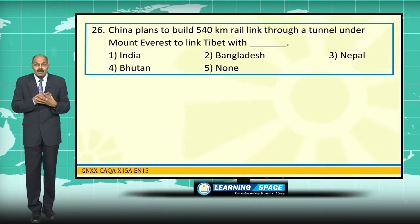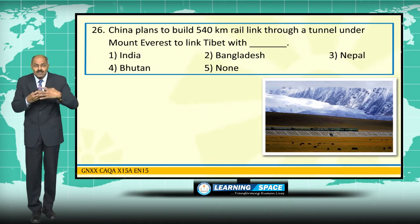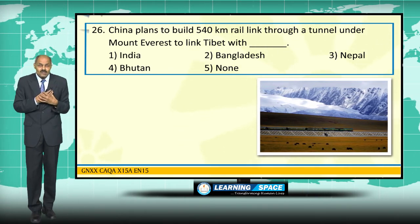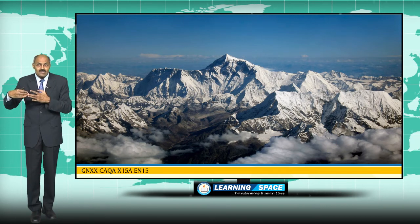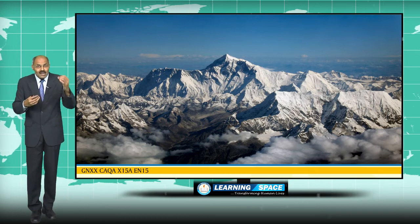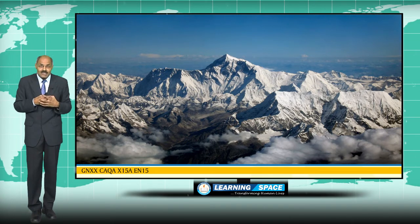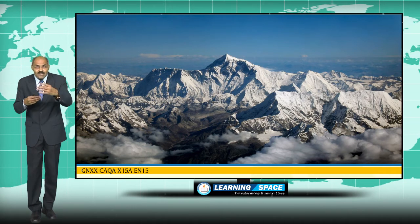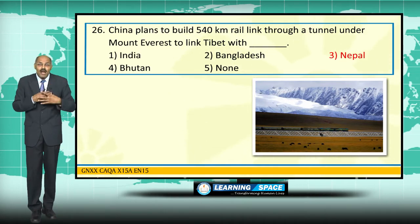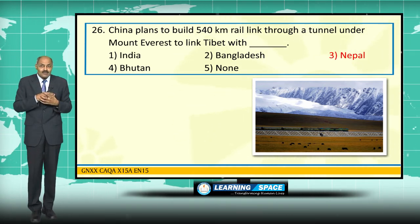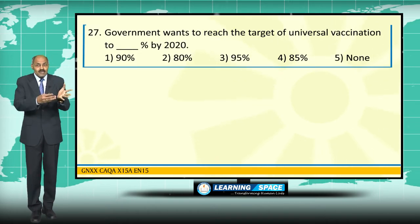China plans to build a 540-kilometer rail link from Tibet to the Nepal border. Having already built a rail link to Tibet, China now wants to extend it through a tunnel under Everest — the highest mountain in the world at 8,848 meters. This 540-kilometer rail link is to be completed by 2020.